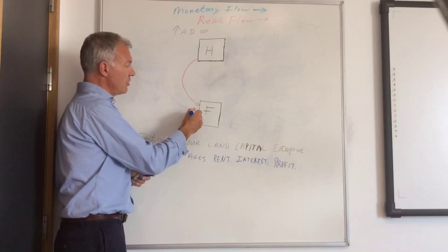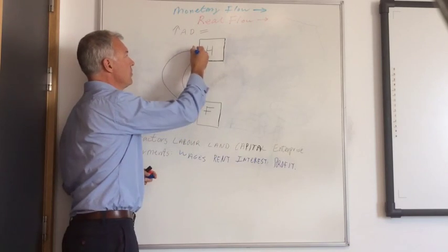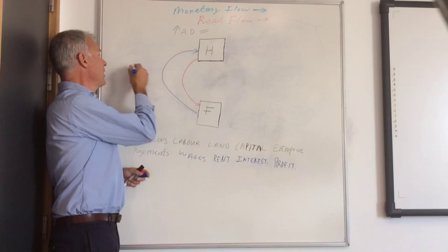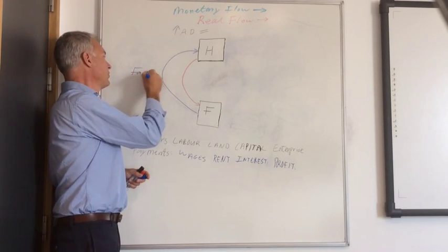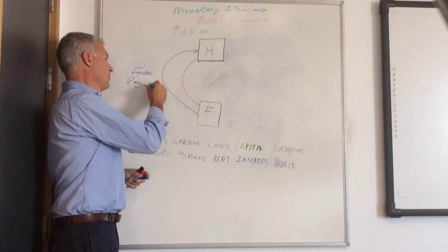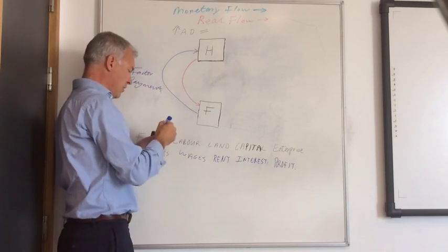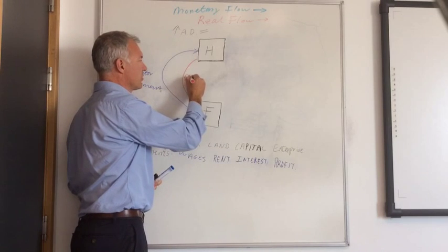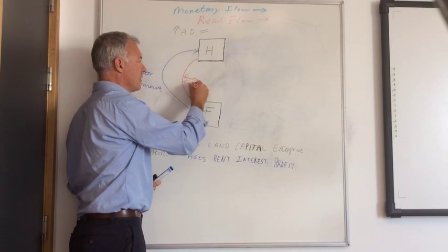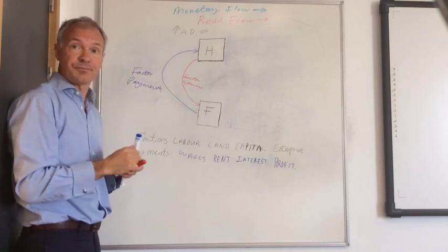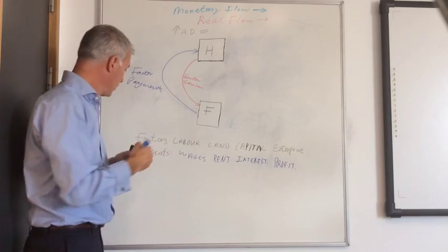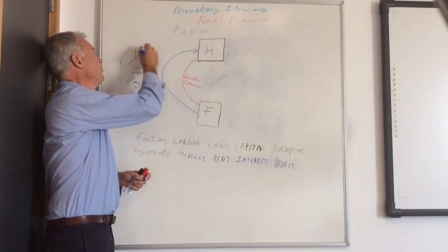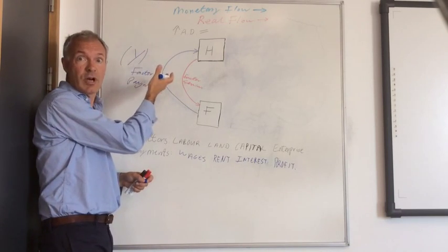And we can show this to the monetary flow. We can show it in blue on the diagram. And so what we have here are factor payments, which I've outlined, for factor services, which we put in red. So we've got the factor services here. And the factor payments, often called income. When you add up all the factor payments together, they're called income. And the symbol for income in economics is Y.